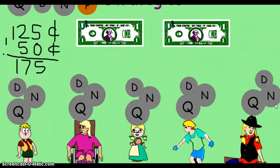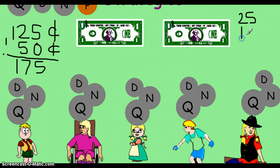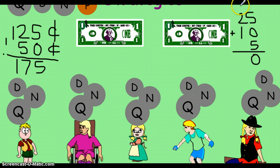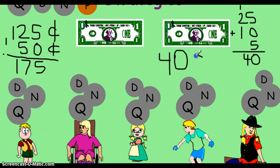So how much did each of my five friends get? Let's add it all together. They each got a quarter, which was worth twenty-five, a dime, which was worth ten, and a nickel, which was worth five. Let's add those together. And we get forty. So each of my friends got forty cents, and I divided two dollars into five for five of my friends.